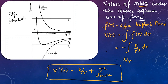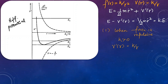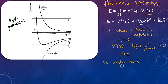We have plotted the effective potential on the y-axis with R on the x-axis. The first case is when the force is repulsive, meaning K is greater than zero. Our effective potential K over R plus J-squared over 2mR-squared is then greater than zero — the effective potential is positive. Since kinetic energy cannot be negative, only positive total energies are possible in this case.